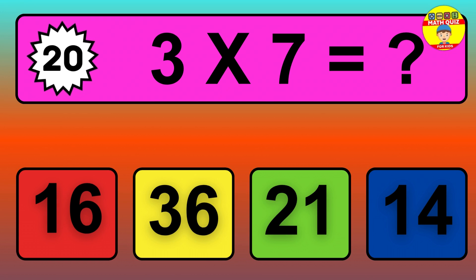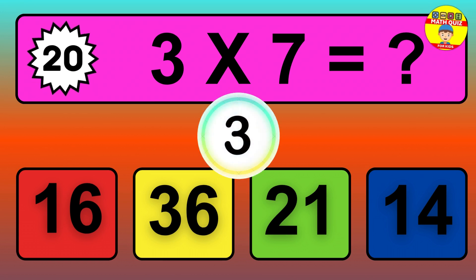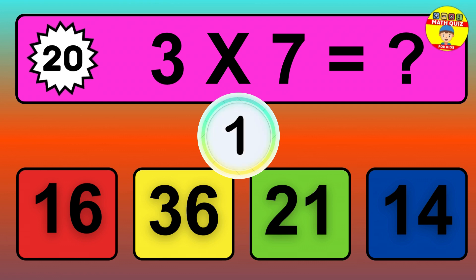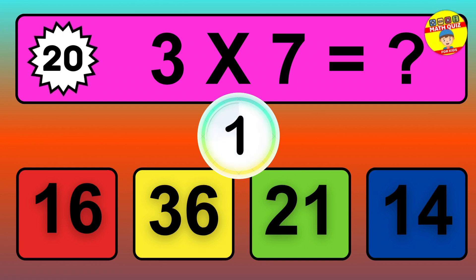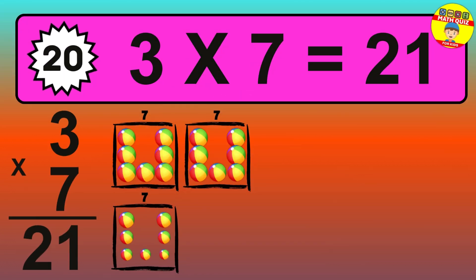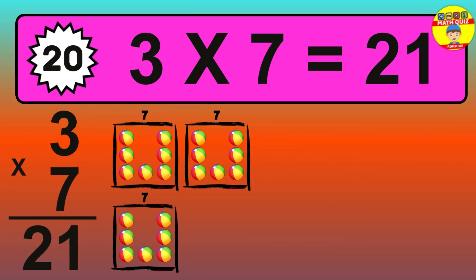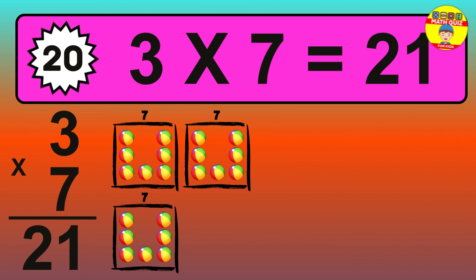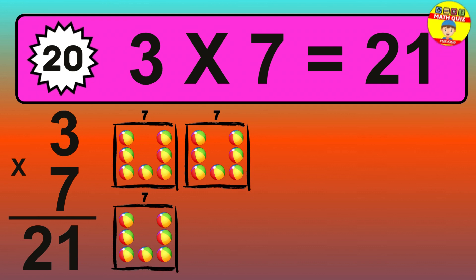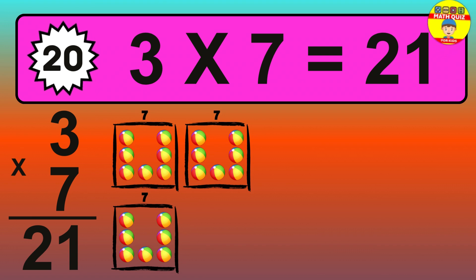Question 20. 3 times 7 equals what? The answer is 3 times 7 is 21. To calculate, we have 3 groups with 7 balls each one. So, how many balls do we have? 21 balls.